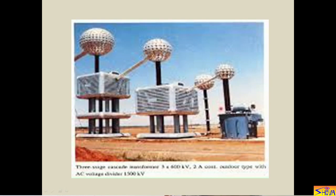There are spheres and finally all spheres form a big sphere to avoid corona. The output of the first unit is given to the second unit, and the output of the second unit is given to the third unit. This is the outdoor application for the cascaded transformer.